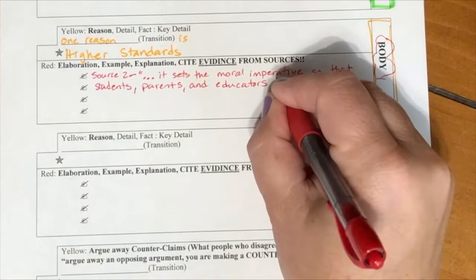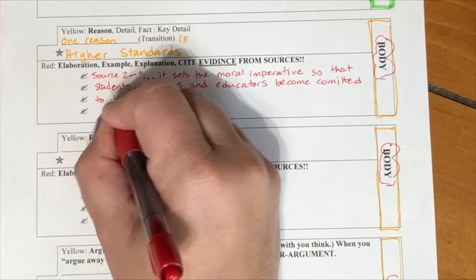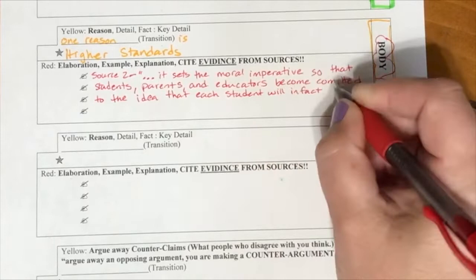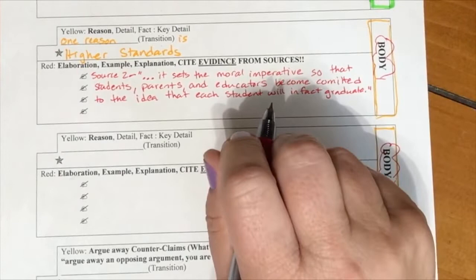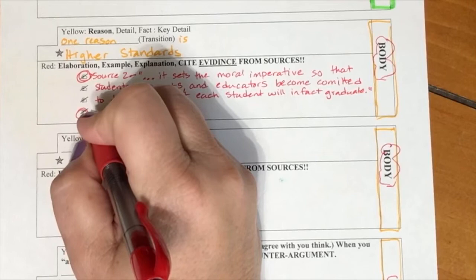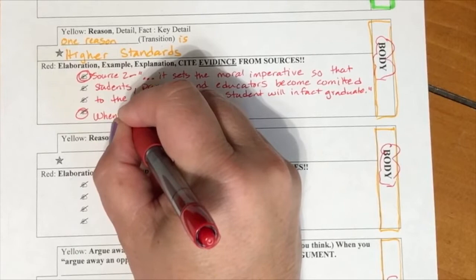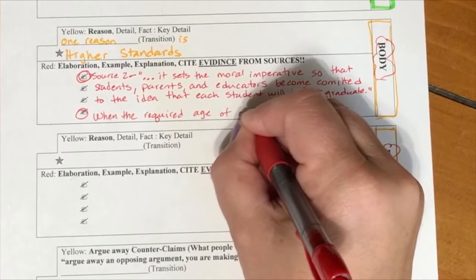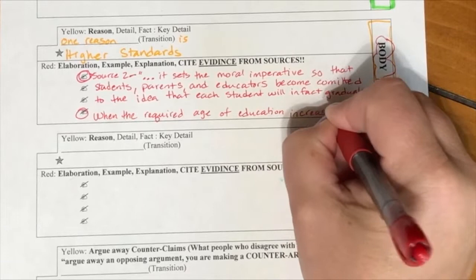This quote really explains that when states set higher ages for being allowed to leave school, that changes the mentality of all the people involved, the students, the parents and the educators, and that they are going to be more committed to the idea that students are going to graduate because they have to stay in school. Another piece of information that I found was that when the required age of education increases, so do graduation rates. If you want to go find your own sources, I'm going to let you do that. But keep in mind, is it a reliable source? Where are we getting that information from? If you can't do that, just use what is given to you in the book.